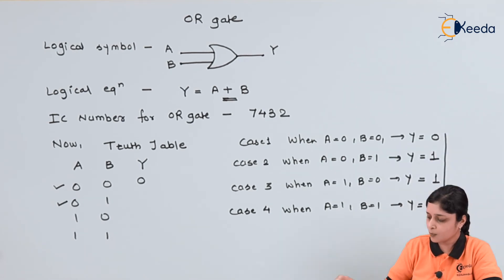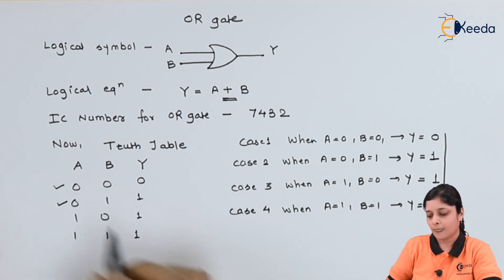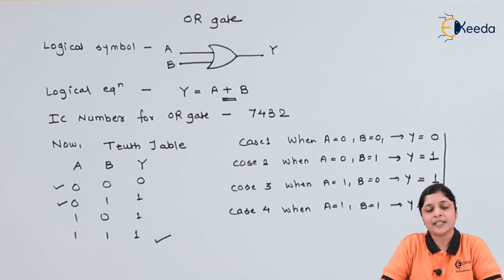So these are all the outputs you have to write here to make the truth table complete. This truth table is very important while calculating the logical additions. Thank you for watching this video. Subscribe to Ikeda and stay tuned with Ikeda.